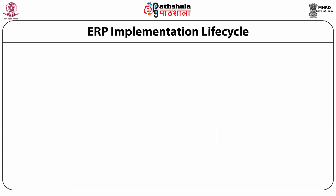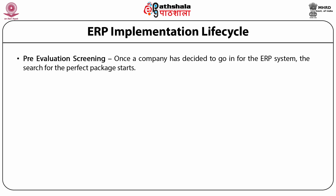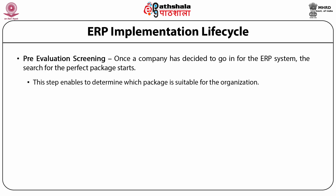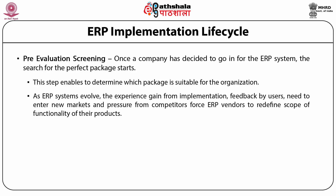The following diagram represents an ERP implementation lifecycle. The very first stage is pre-evaluation screening. Once a company has decided to go in for an ERP system, the search for the perfect package starts. This step enables determination of which package is suitable for the organization. As ERP systems evolve, the experience gained from implementation, feedback by users, need to enter new markets, and pressure from competitors force ERP vendors to redefine the scope and functionality of their products.